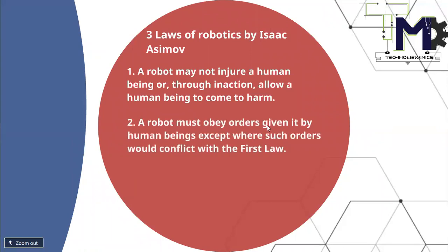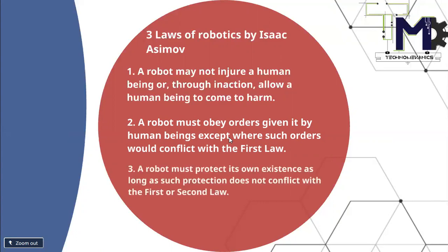The second law states that a robot must obey orders given by its human operators, except where such orders would conflict with the First Law. This means the robot must follow whatever instruction is given by humans — whether in war or other situations — but it should not follow orders that involve harming someone, as that would conflict with the first law.